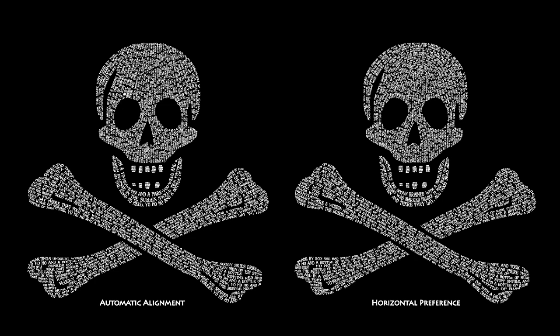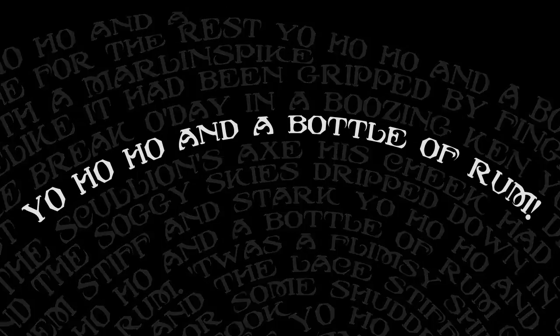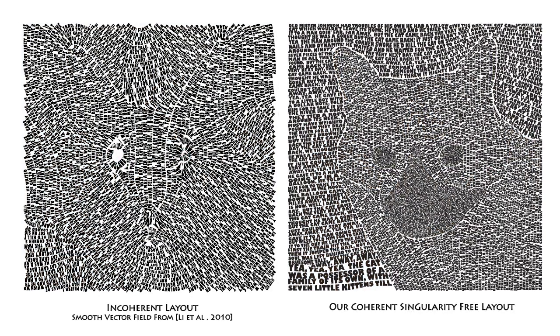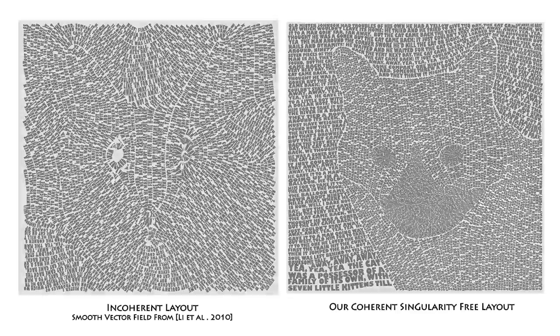We show two examples of the Jolly Roger flag. On the left, the image was created with our automatic alignment algorithm to produce a singularity-free field. The right shows an alternative field generated with our method given the user preference for horizontal alignment. Here we show a comparison generated from two different underlying smooth vector fields. Our method shown right generates a coherent singularity-free layout that follows boundaries whenever possible. The increased coherence in our layout is even more evident when colors are removed.